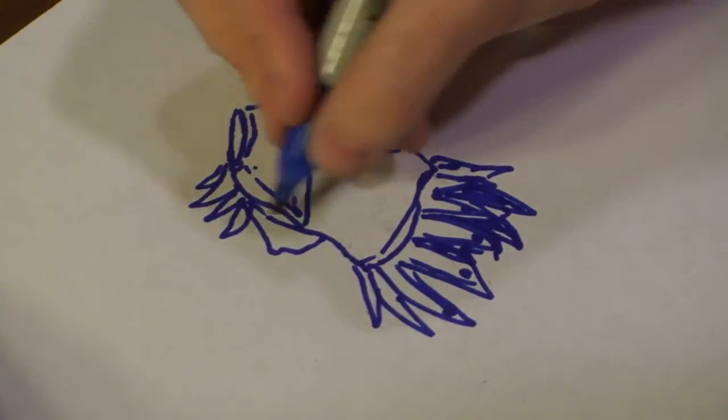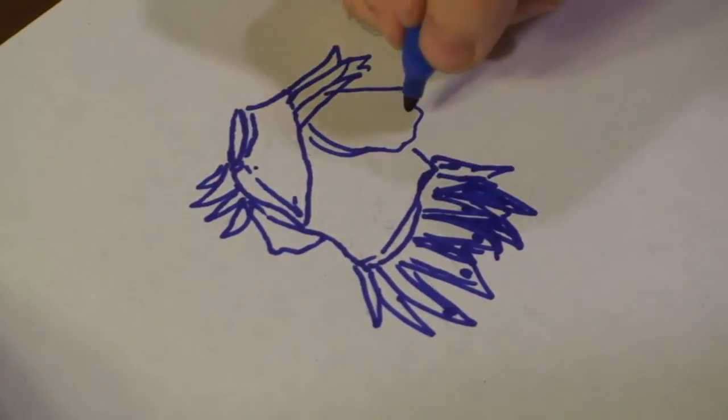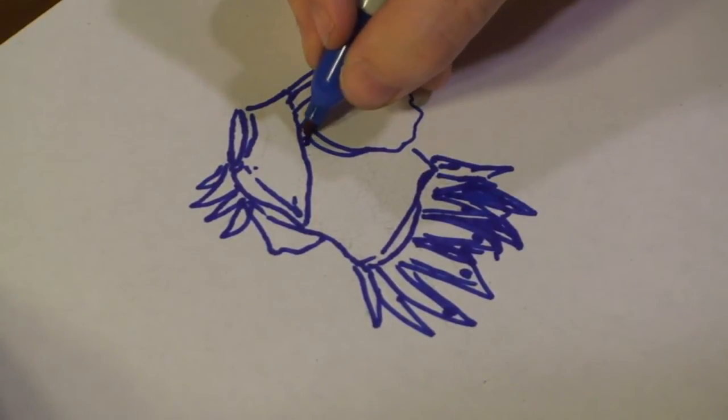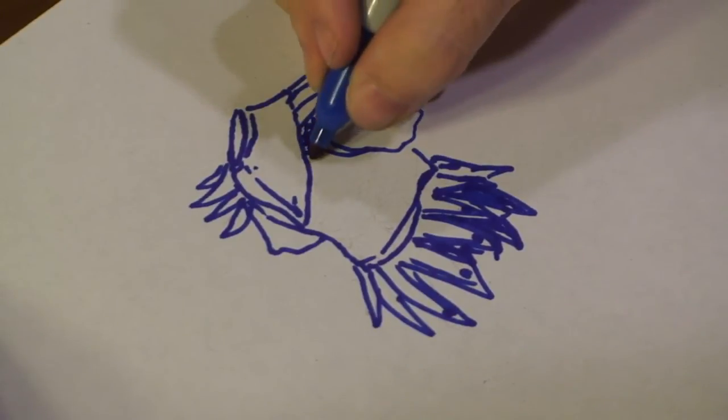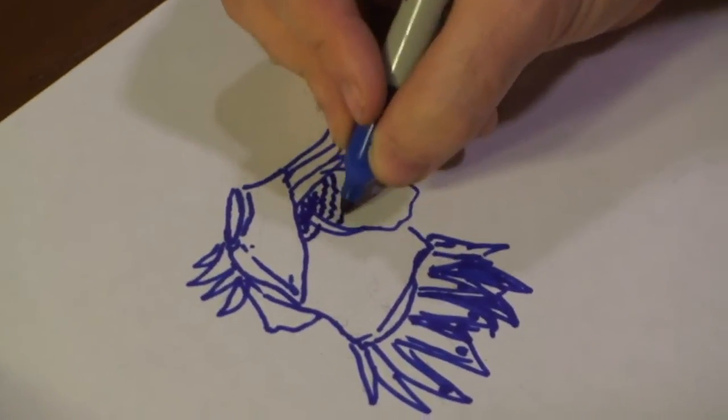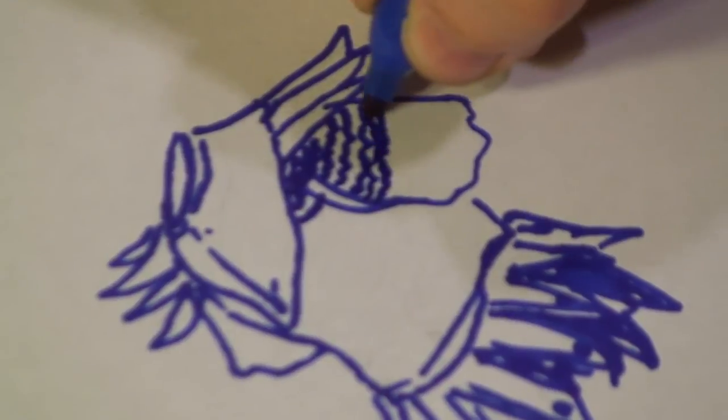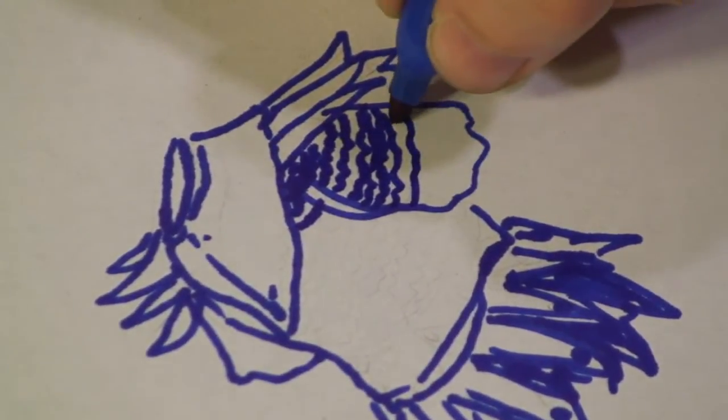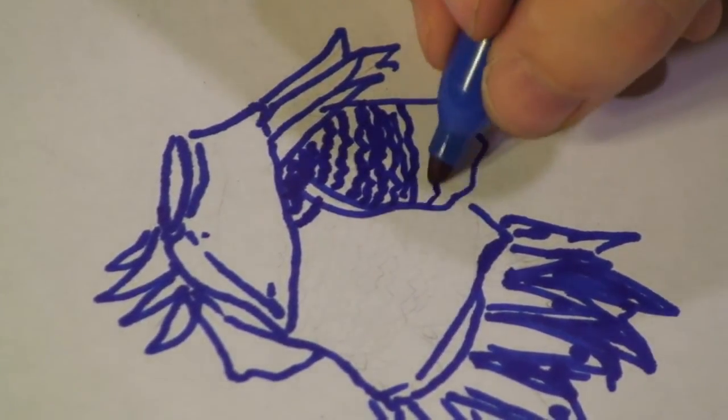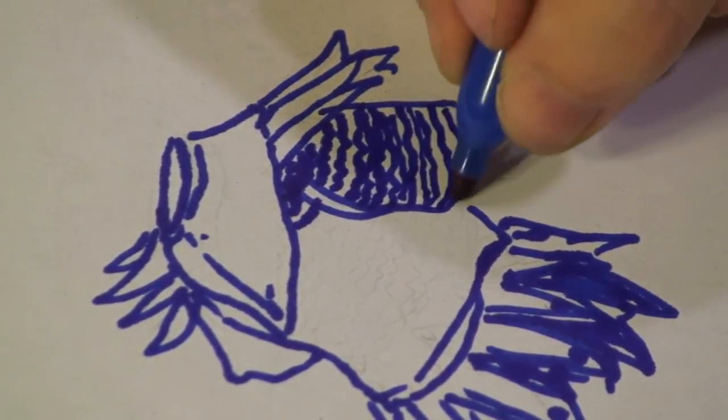Now we've got that. The interlinkings of the chain mail can be easily done by either doing a quick grid, or if you want to make it look really good, just do some squiggly lines. Like so.